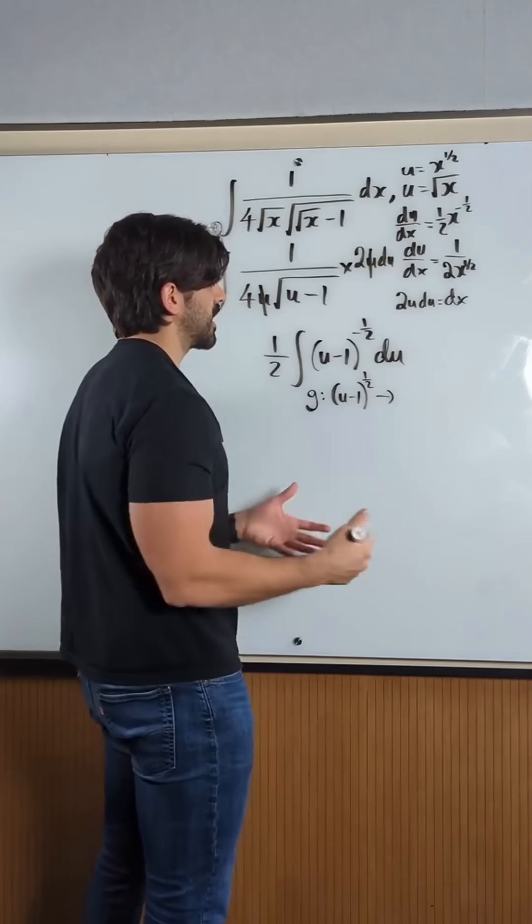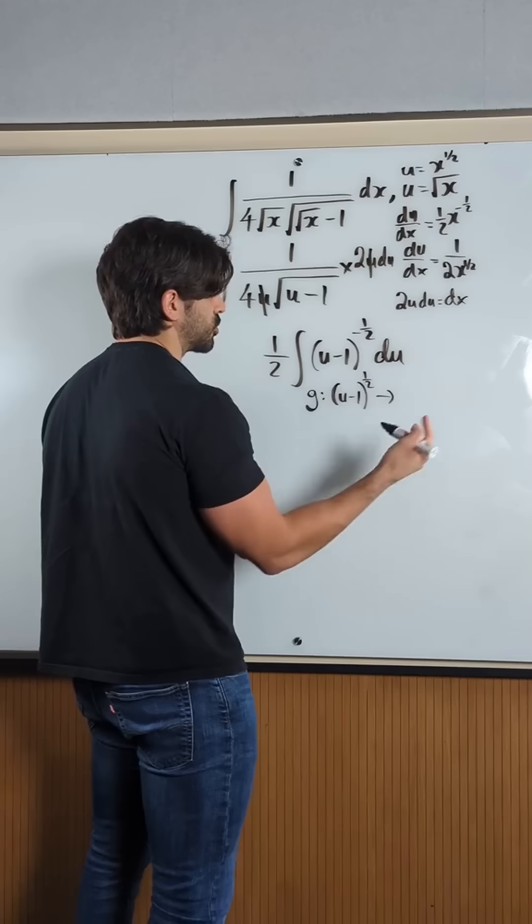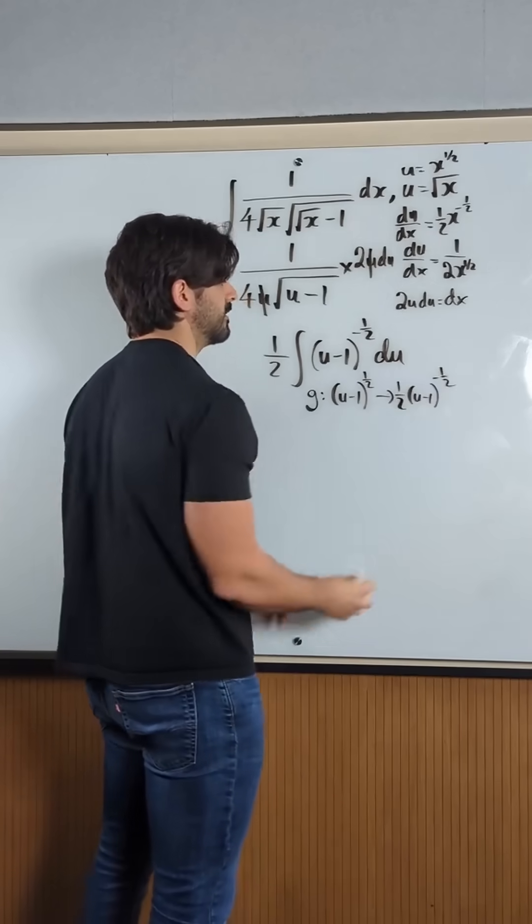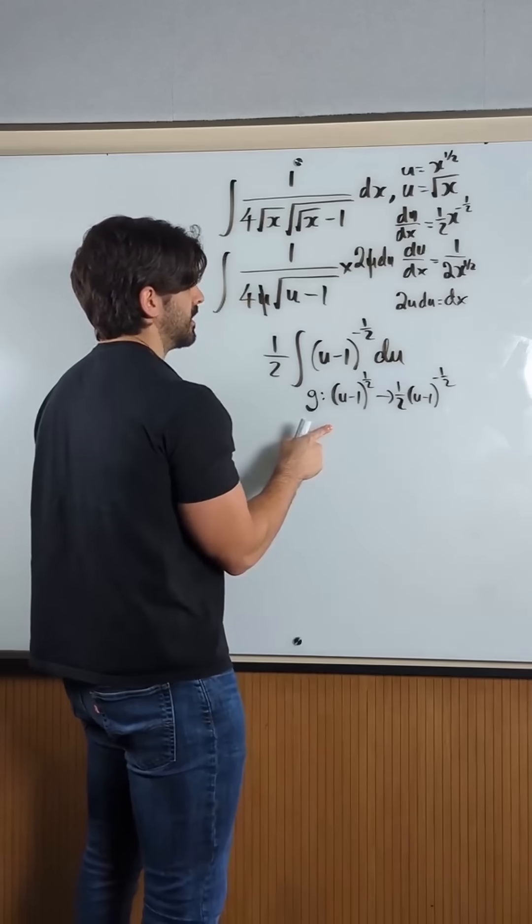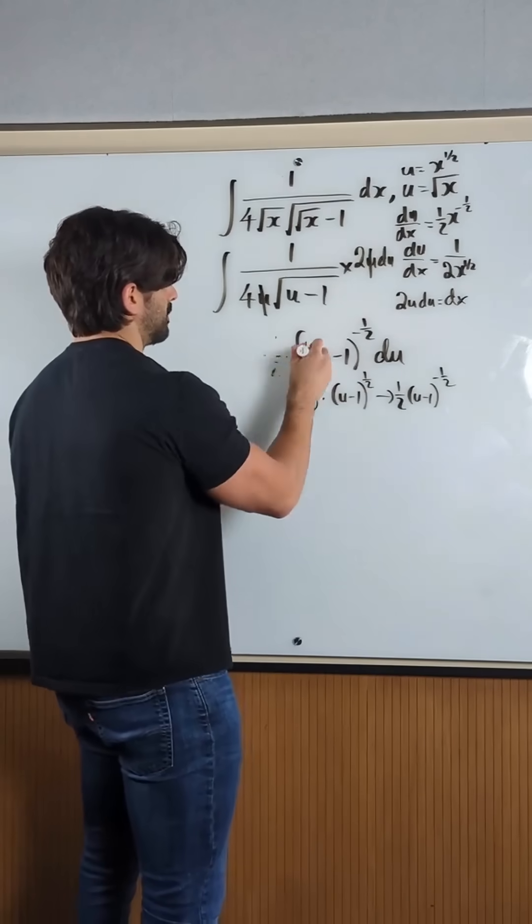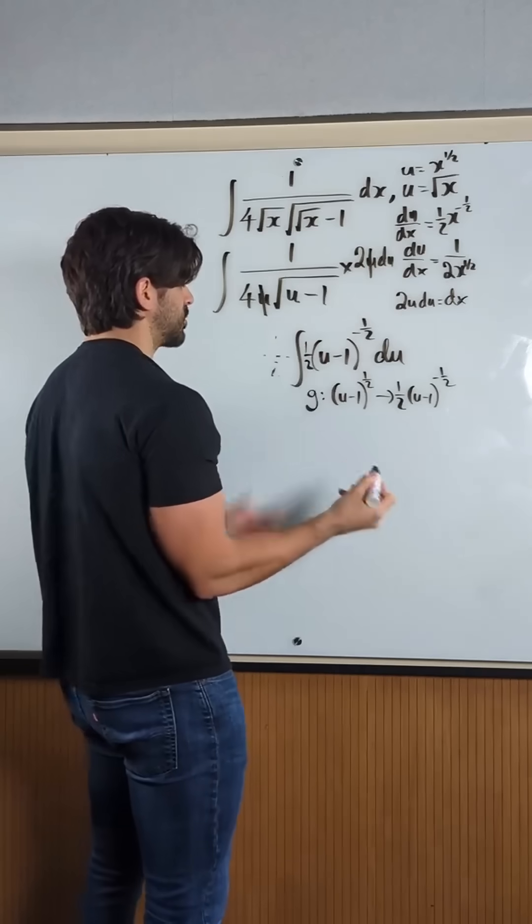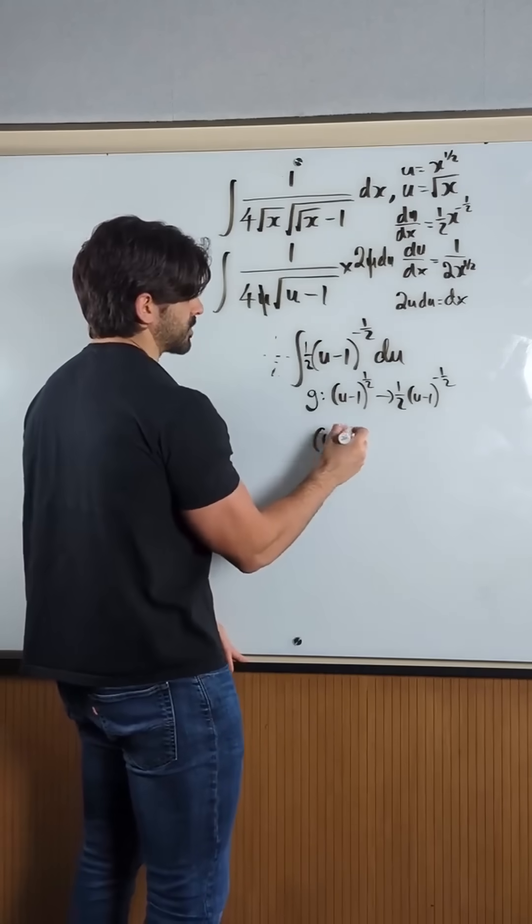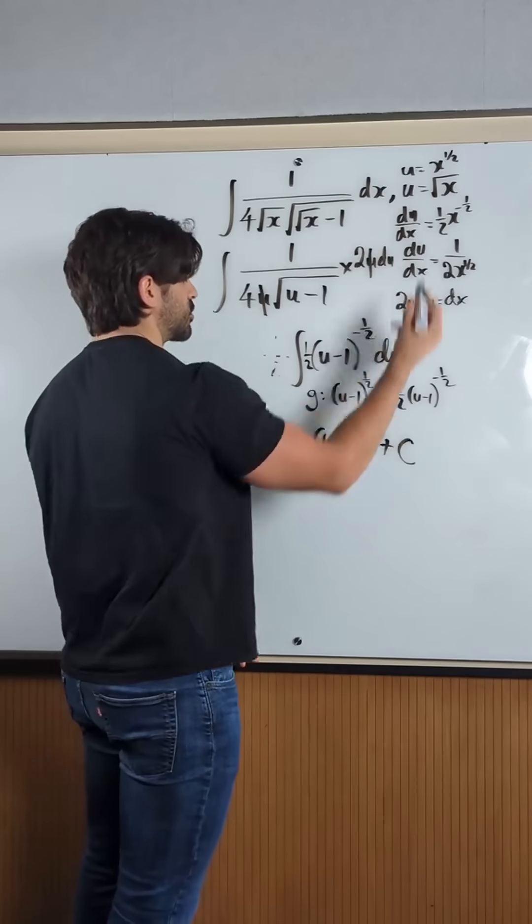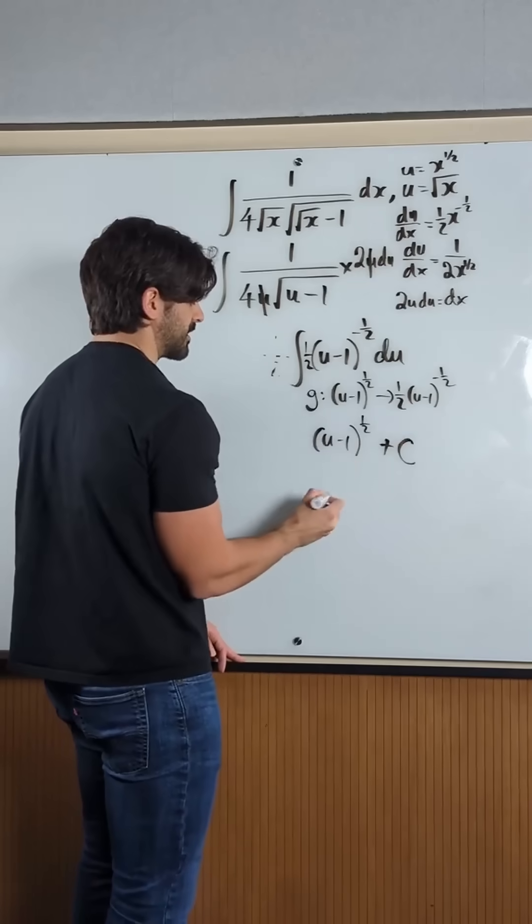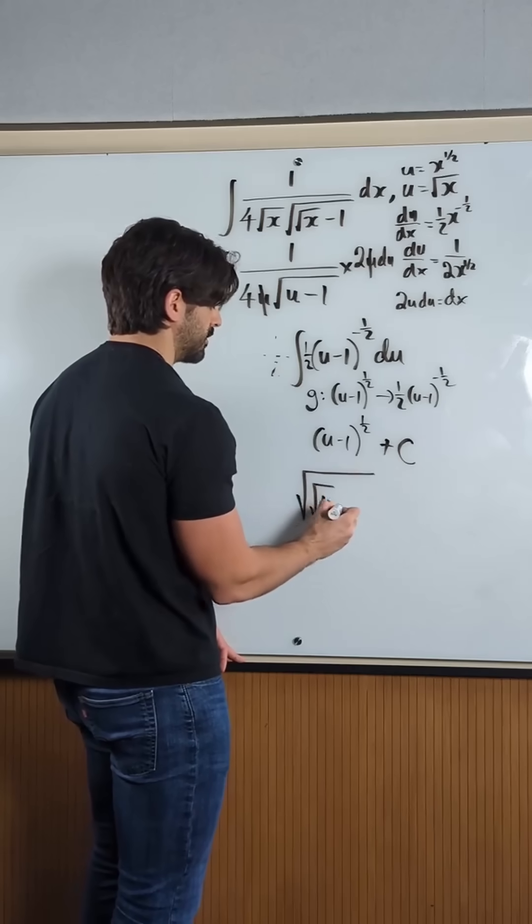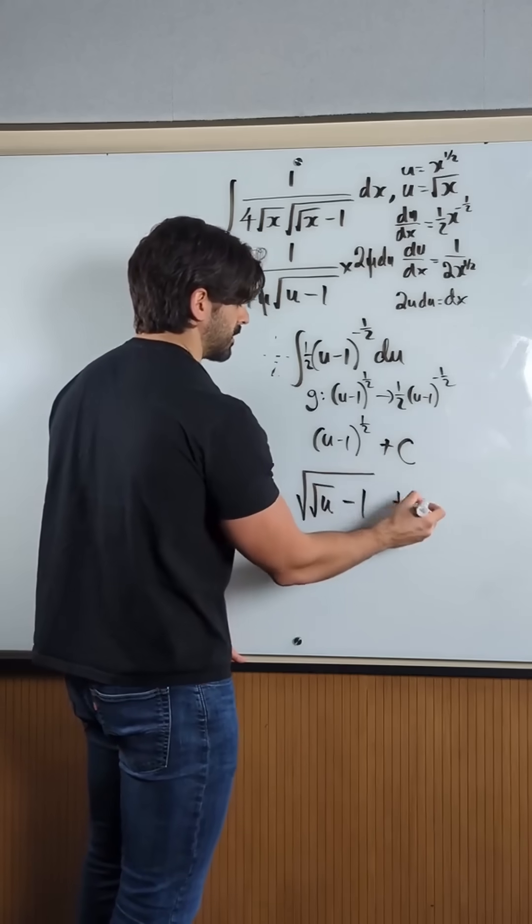When you differentiate that to check, I'm saying this integrates to this, but you check your answer. This differentiates to this, which means that integrates to this. If I include the half, I'm done. There's your answer. You have u minus 1 to the power of a half, and then plus c. Then u is just root x, and I'm going to write this as the root. So you have the root of root x minus 1 plus c.